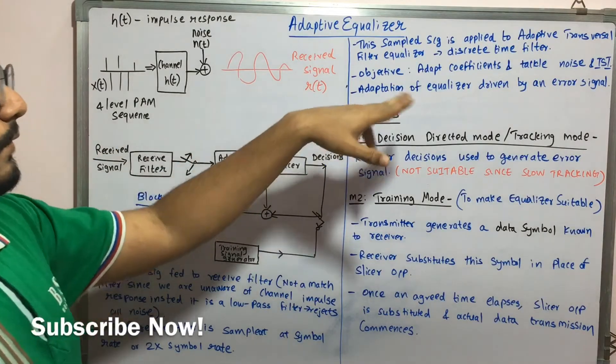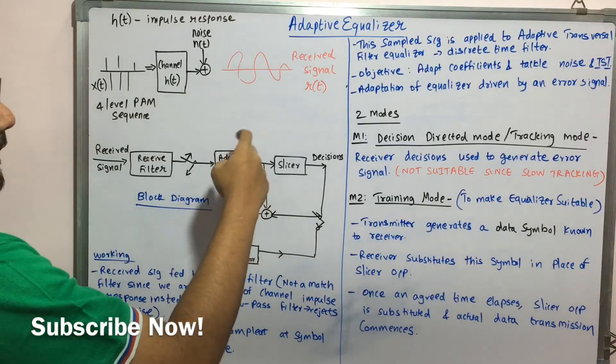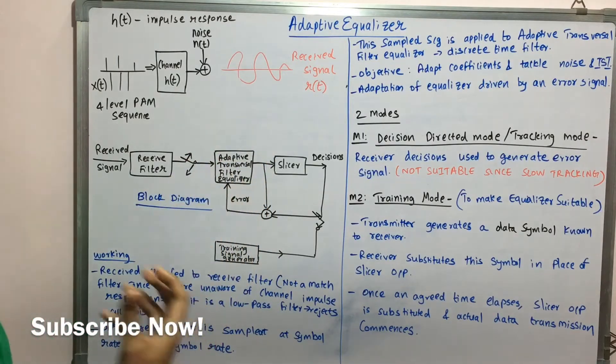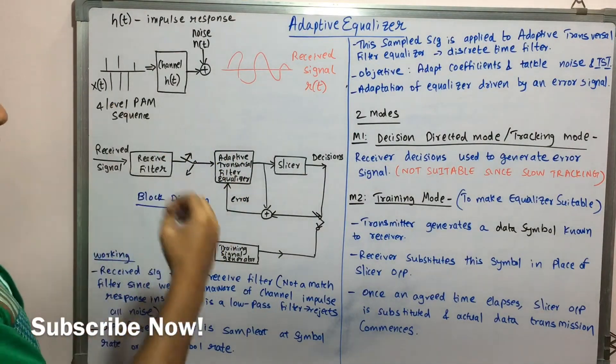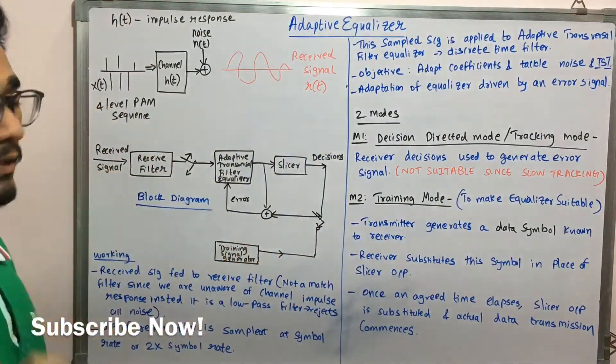Now this adaptation of equalizer is driven by an error signal. So after processing of this adaptive equalizer, you get an error signal that is called as ET, that is prediction error. Now, after this, you have two basic modes in which adaptive equalizer works.